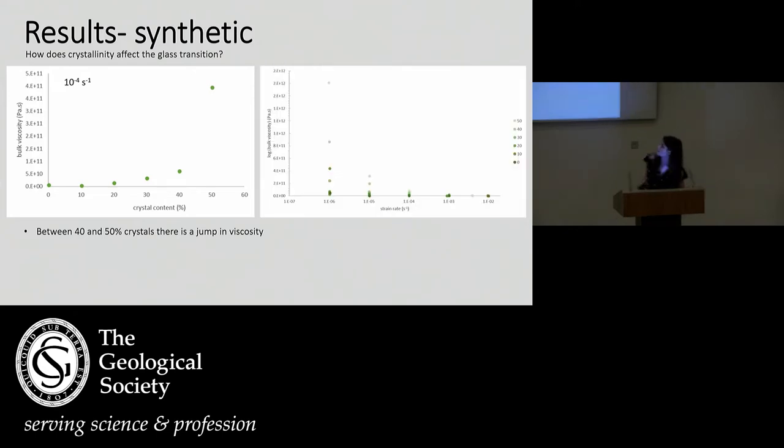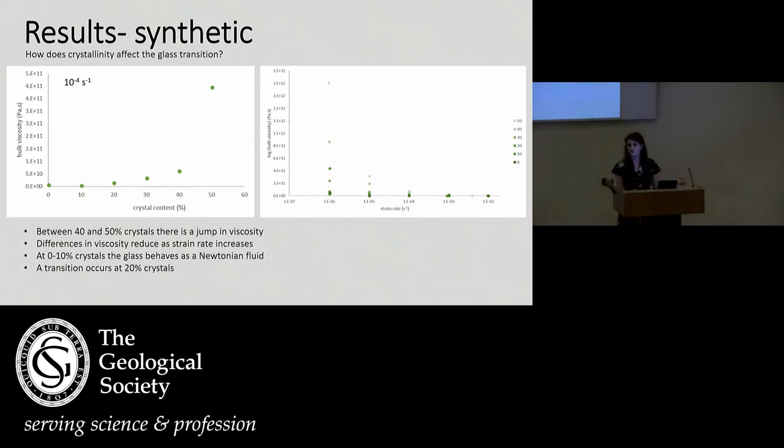Something kind of new that I've found is that when I look at the viscosity, so viscosity is on the y-axis and the strain rate is on the x-axis, as we increase our strain rate, this jump in viscosities between crystal contents actually decreases. Currently, I don't really know why that is. One theory could be that at these slower strain rates, the crystals have more time to reorganize themselves and pack themselves into each other, where at these faster strain rates, they just don't have that time. We've also seen that between 0% and 10%, these materials behave as Newtonian materials. We don't see a change in viscosity with strain rate. Then at 20% crystals, we see a transition between this Newtonian to non-Newtonian behavior. Then above 30% crystals, all our samples behave as non-Newtonian shear-thinning materials.